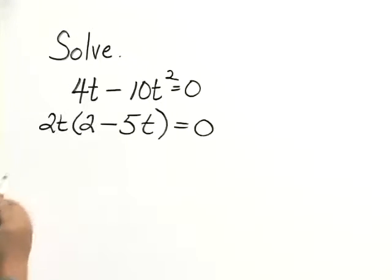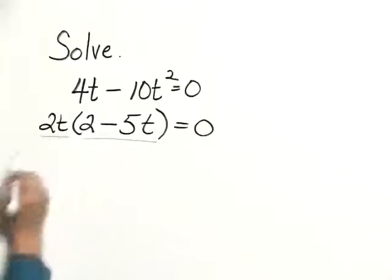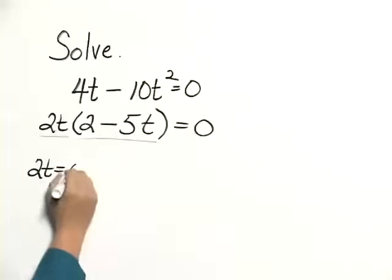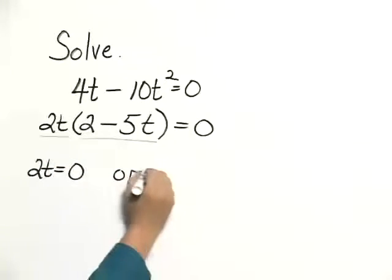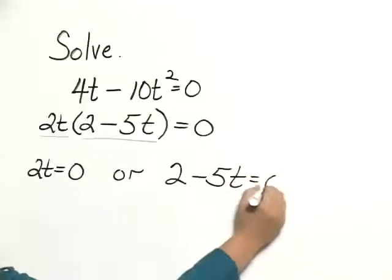Now there are two factors here. 2t is a factor, and 2 minus 5t is a factor. So when we use the principle of zero products, we need to set 2t equal to 0, and we also need to set 2 minus 5t equal to 0.